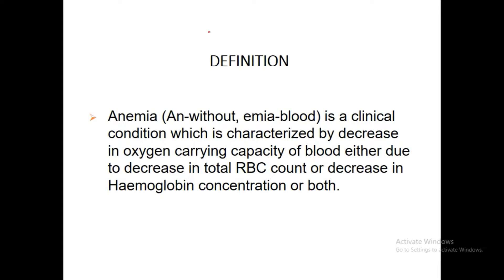The definition of anemia is most important. Anemia is a clinical condition characterized by a decrease in oxygen-carrying capacity of the blood, either due to a decrease in total RBC count, decrease in hemoglobin concentration, or both. The word anemia consists of 'an' meaning without and 'emia' meaning blood.